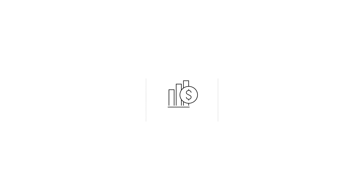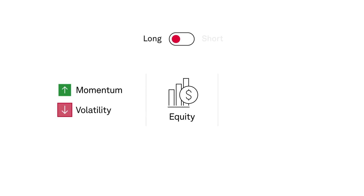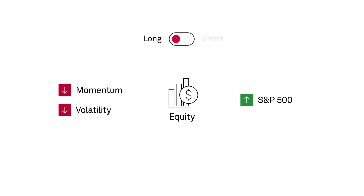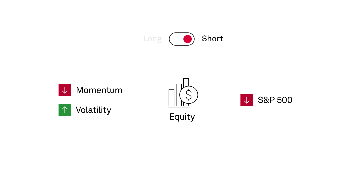Within the equity component, rising price momentum and declining market volatility generally trigger an increase in its allocation to the S&P 500. Conversely, when momentum signals weaken and volatility is higher, the index may decrease its allocation to the S&P 500.